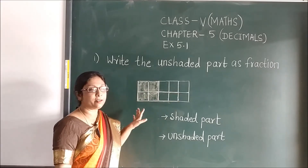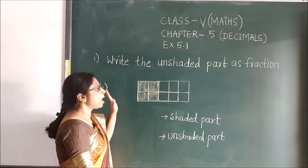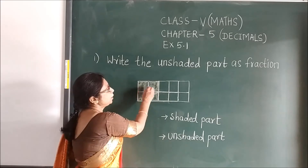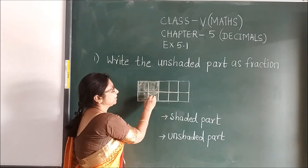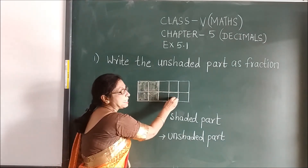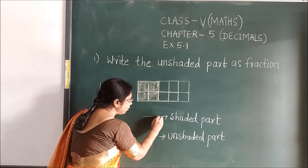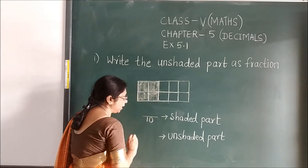Now we will see the second figure, children. Count the total parts: 1, 2, 3, 4, 5, 6, 7, 8, 9, 10. So again 10 — we will write 10 in the denominator.